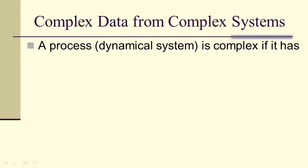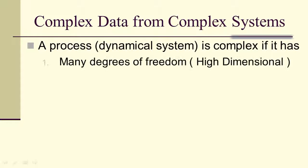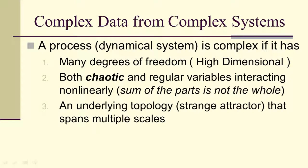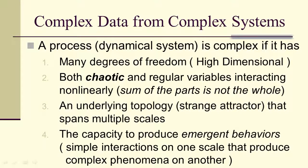Complex data comes from complex systems. A process or dynamical system is complex if it has many degrees of freedom, is high-dimensional, chaotic, and has regular variables interacting non-linearly, an underlying topology and structure that spans multiple scales, and the ability to produce emergent behaviors. Interactions on one scale that produce complex phenomena on another.